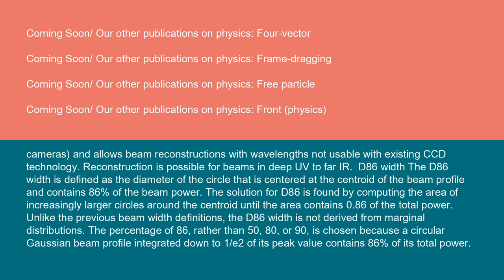D86 width: The D86 width is defined as the diameter of the circle that is centered at the centroid of the beam profile and contains 86% of the beam power. The solution for D86 is found by computing the area of increasingly larger circles around the centroid until the area contains 0.86 of the total power. Unlike the previous beam width definitions, the D86 width is not derived from marginal distributions. The percentage of 86 rather than 50, 80, or 90 is chosen because a circular Gaussian beam profile integrated down to 1/e² of its peak value contains 86% of its total power.